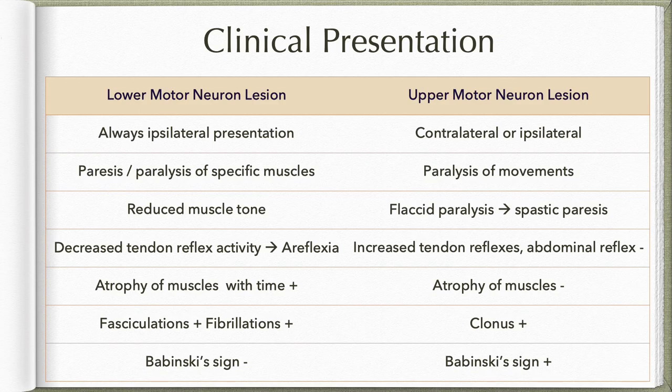Upper motor neuron lesion usually affects anti-gravity muscles like biceps and quadriceps. Unlike lower motor neuron lesion, there is increased tendon reflex activity, however abdominal reflex will be absent. Atrophy of muscles is not seen because individual muscles are not paralyzed. Clonus is a feature of upper motor neuron lesion, and Babinski sign will be positive.